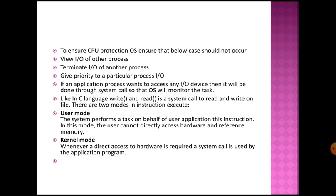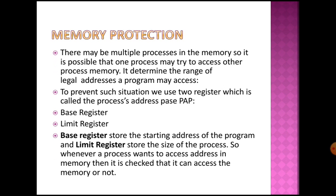Memory protection determines the range of legal addresses for a program — every program has a legal address range that it is allowed to access. For this purpose, we have two registers. The first is the base register, which stores the starting address of the program. The second is the limit register, which stores the size of the process.